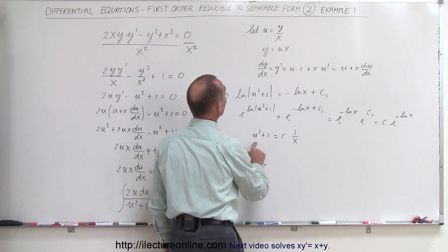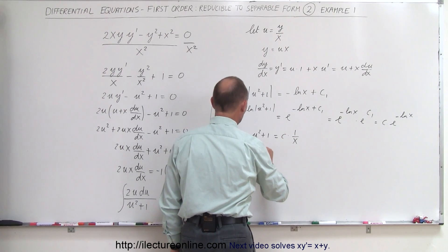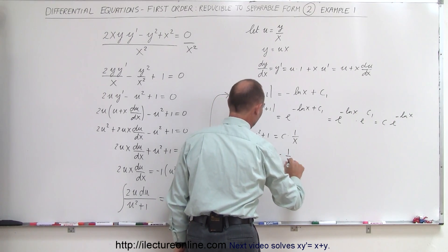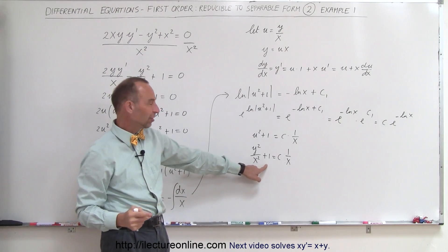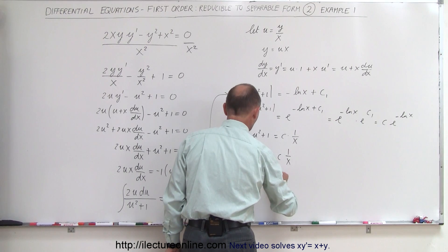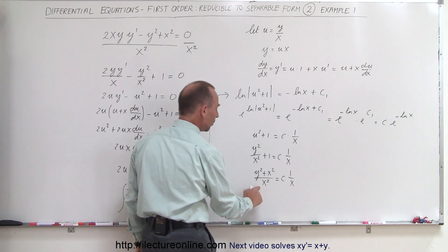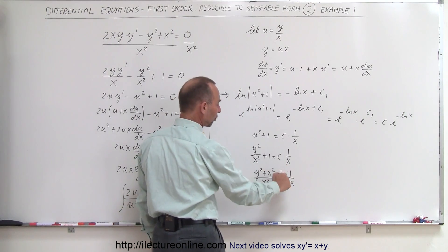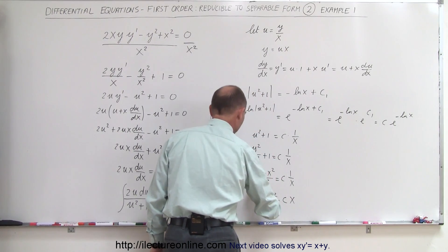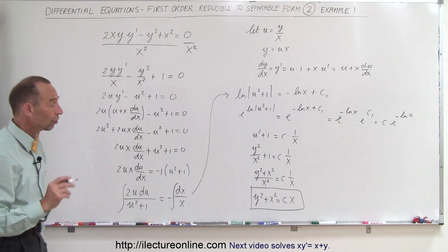Finally, we substitute back since u equals y over x, so u squared equals y squared over x squared. We get y squared over x squared plus 1 equals c times 1 over x. Finding a common denominator on the left gives (y squared plus x squared) over x squared equals c over x. Multiplying both sides by x squared, we end up with y squared plus x squared equals c times x — a good form for the final answer.